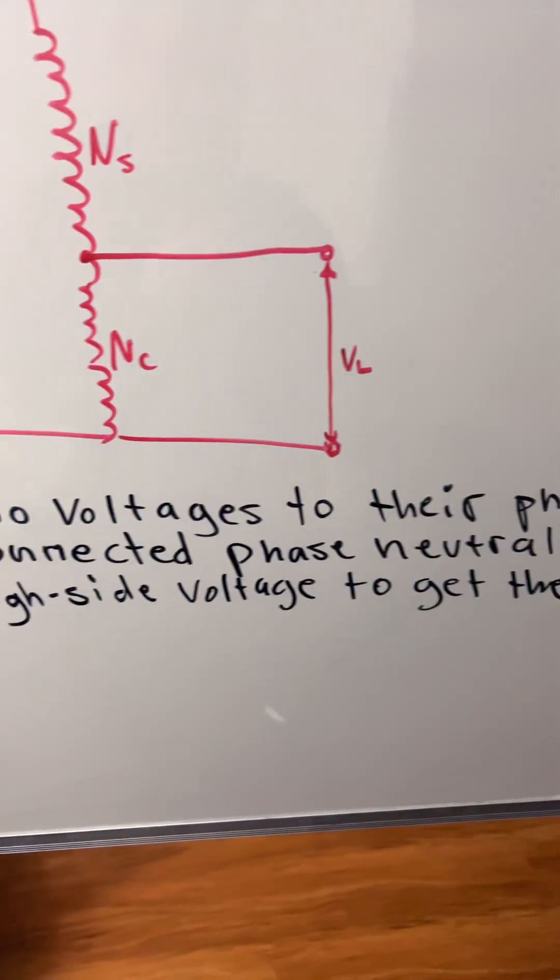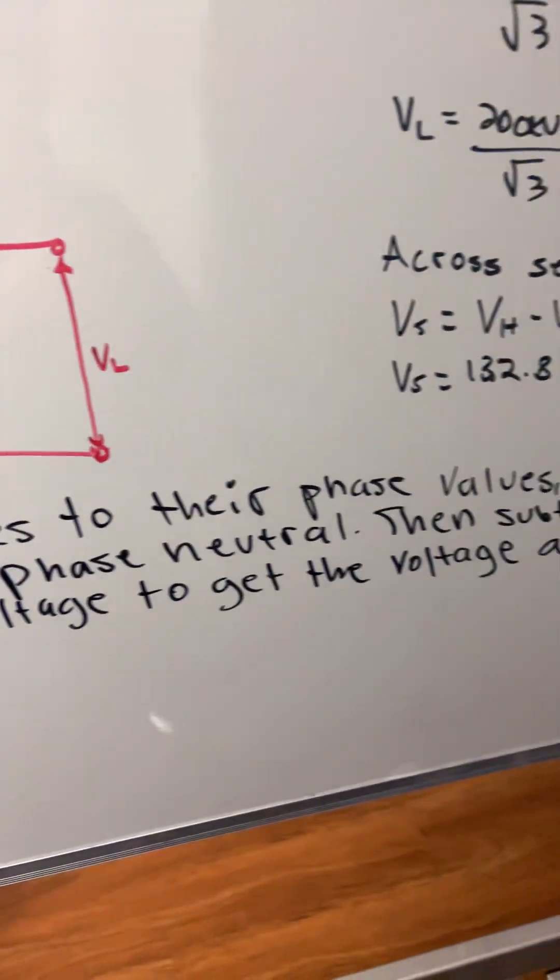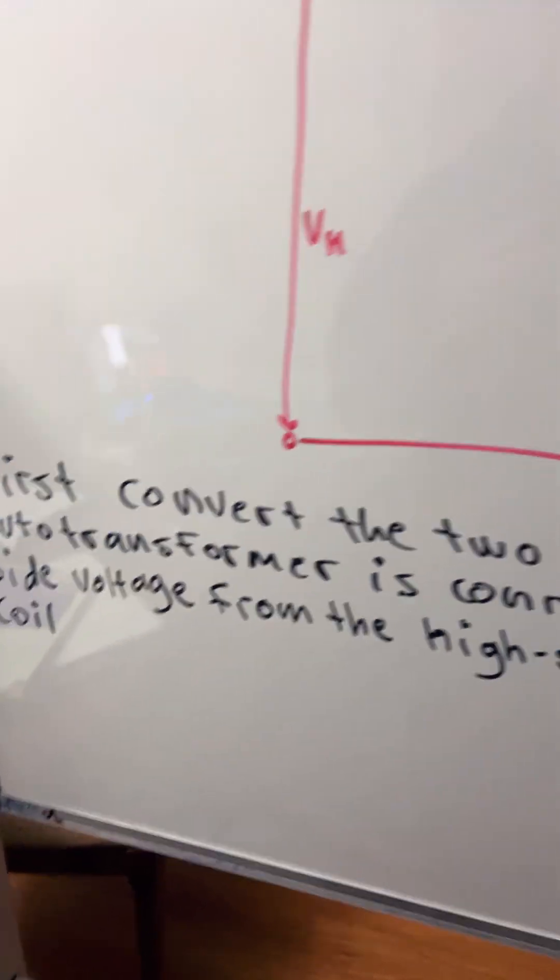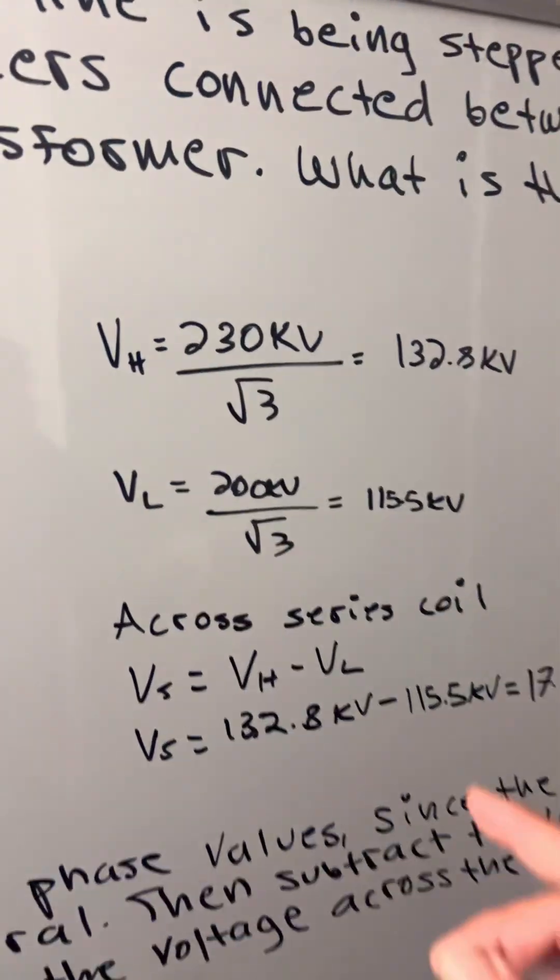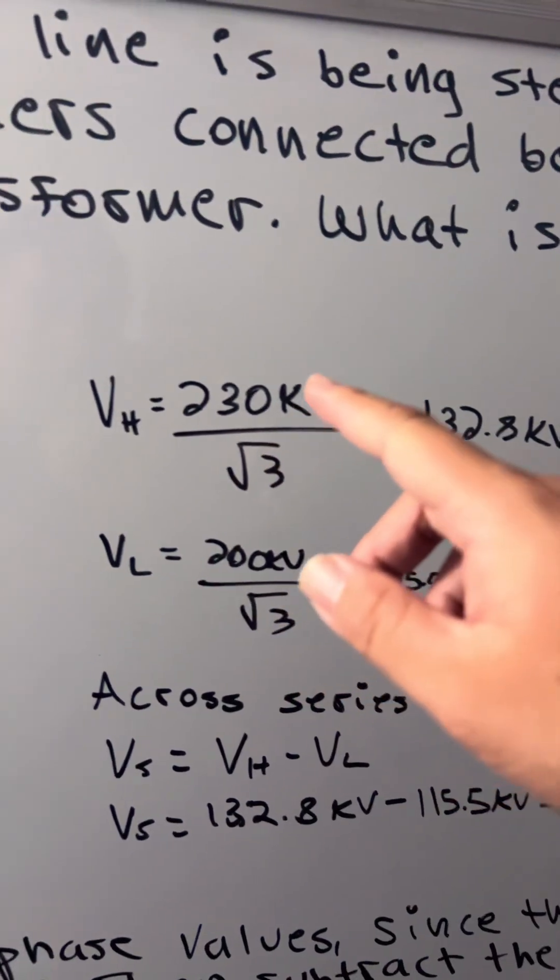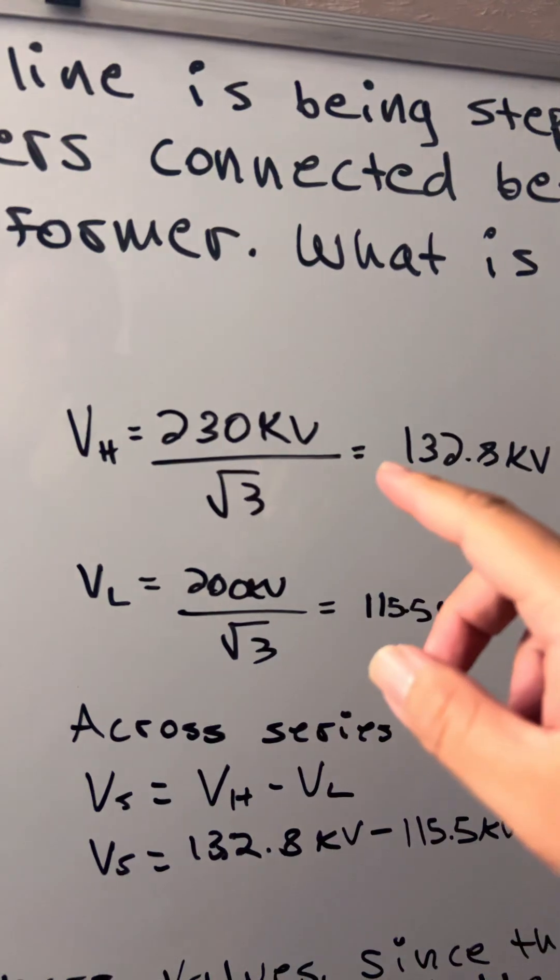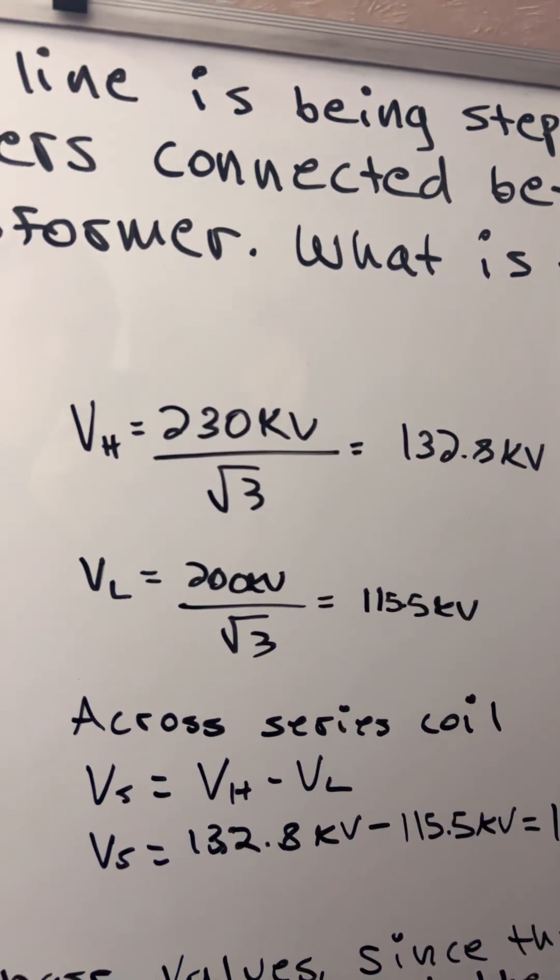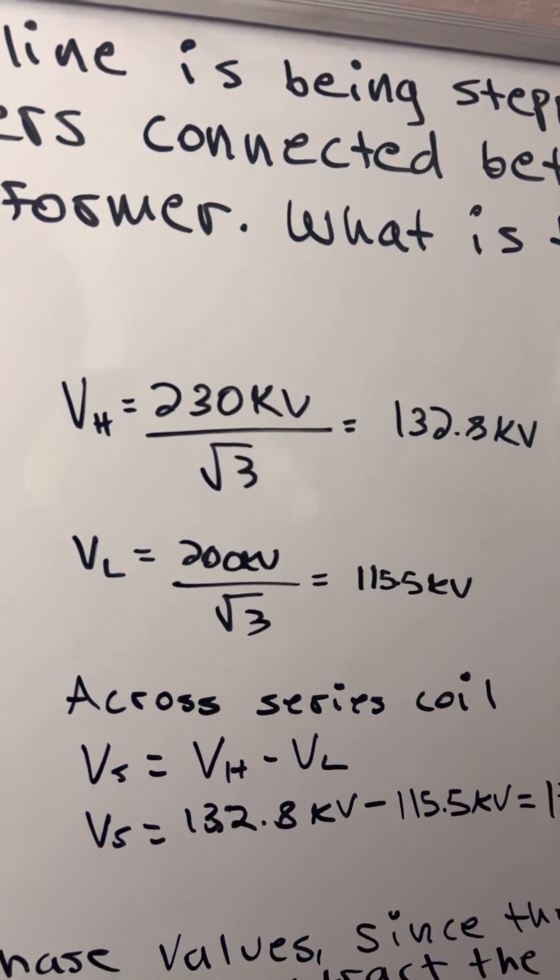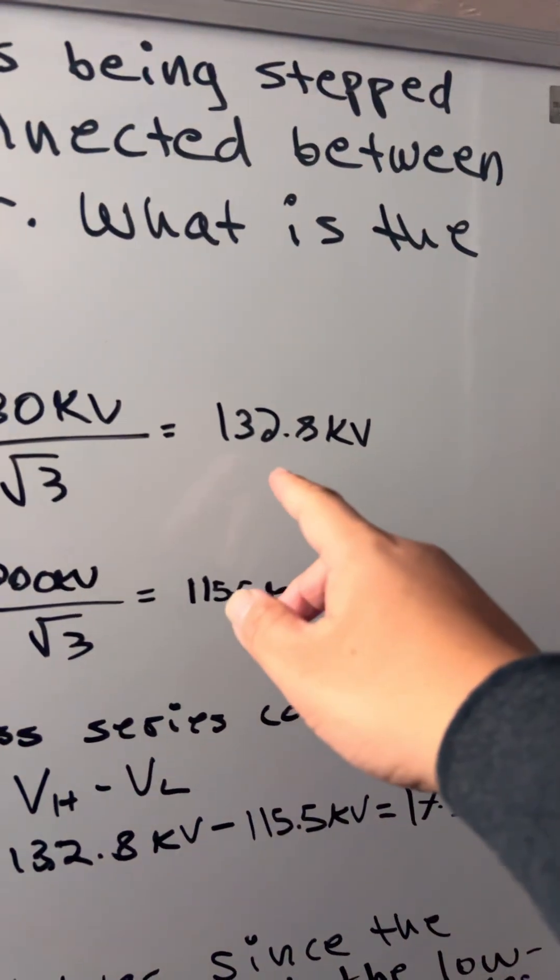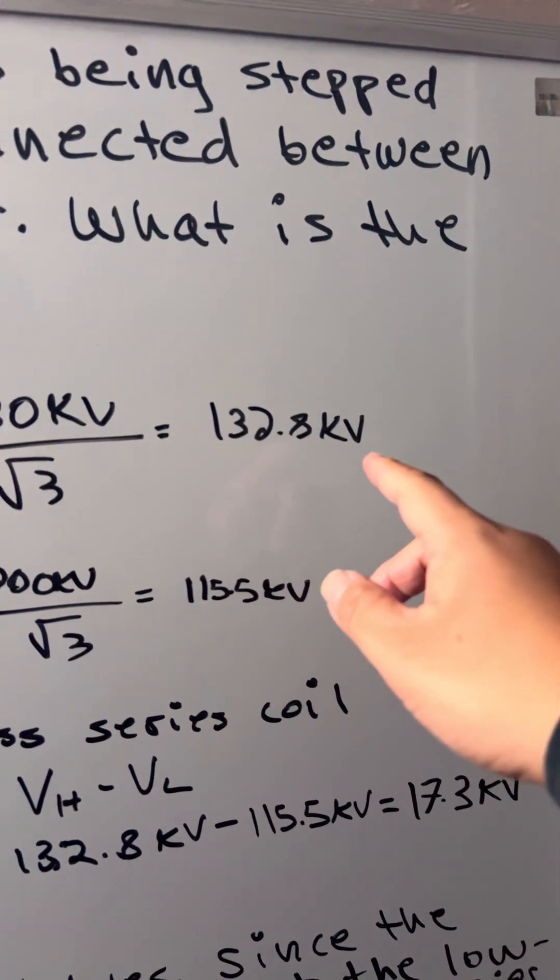To get the voltage across the series coil, this is the high voltage. So we have 230 kV, we're going to divide that by square root of 3, and that will give us 132.8 kV.